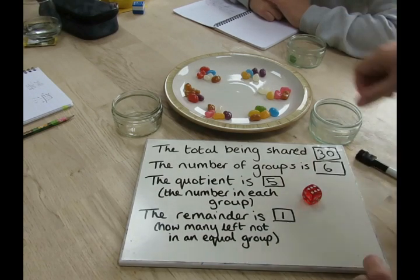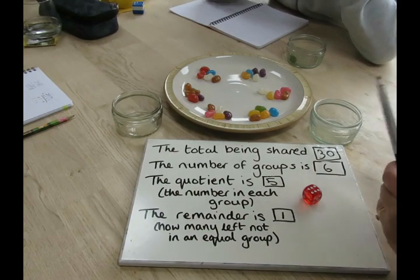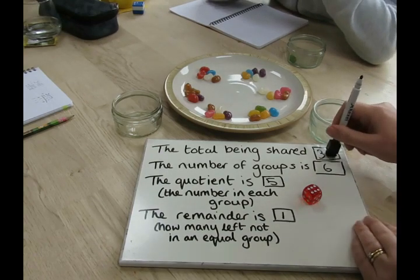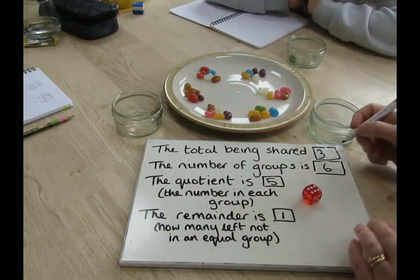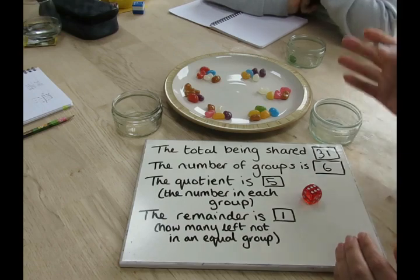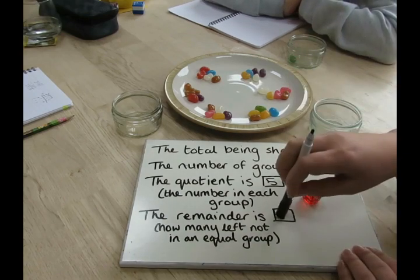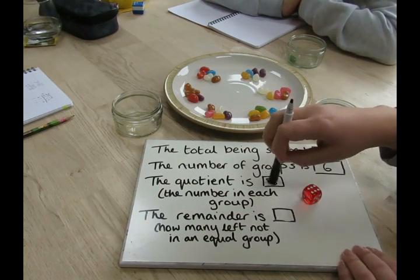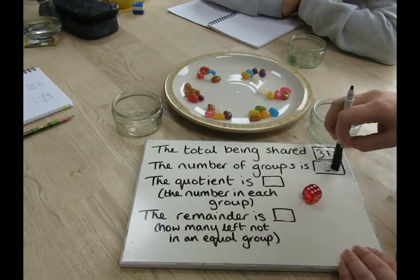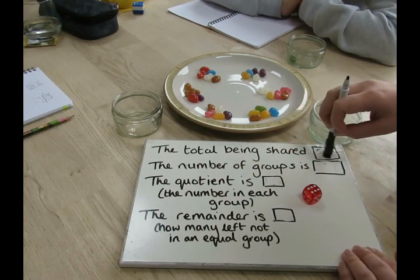It wasn't 30 being shared, it was 31 to start with. But for our next go, since Luke had a remainder of one, how many jelly beans have we got left? We'll have 30. So we'll have 30 left.